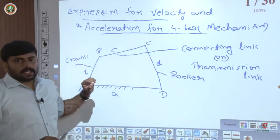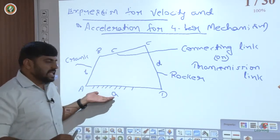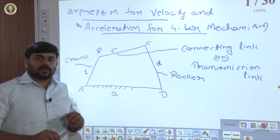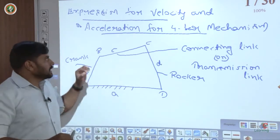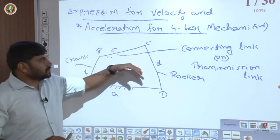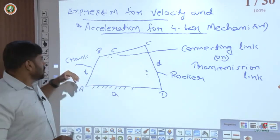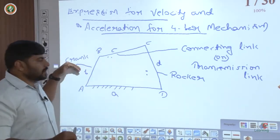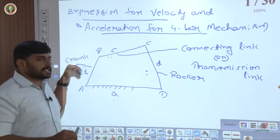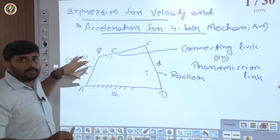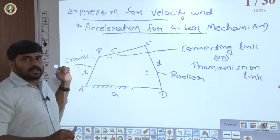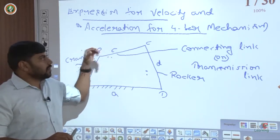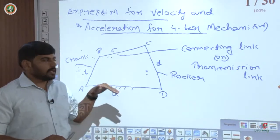In Raven's technique using complex algebra, we replace the link lengths by vectors and equate the resultant vector to zero in the loop closure equation. Using this, we can determine the angular velocity and angular acceleration of the connecting link and the output link. For the input link (crank), we already know the RPM, from which we can determine angular velocity and angular acceleration.